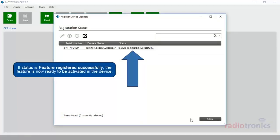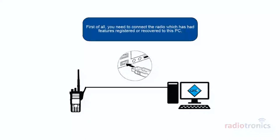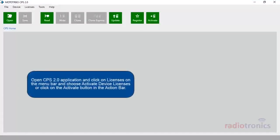If the status is 'Feature registered successfully', the feature is now ready to be activated in the device. Once you have the license registered, now it's time to activate it. When the activation process has completed, the license features are enabled in the device and ready to be configured via CPS 2.0. First of all, you need to connect the radio which has had features registered or recovered to this PC. Open CPS 2.0 and click on Licenses on the menu bar, then choose Activate Device Licenses, or click on the Activate button in the action bar.